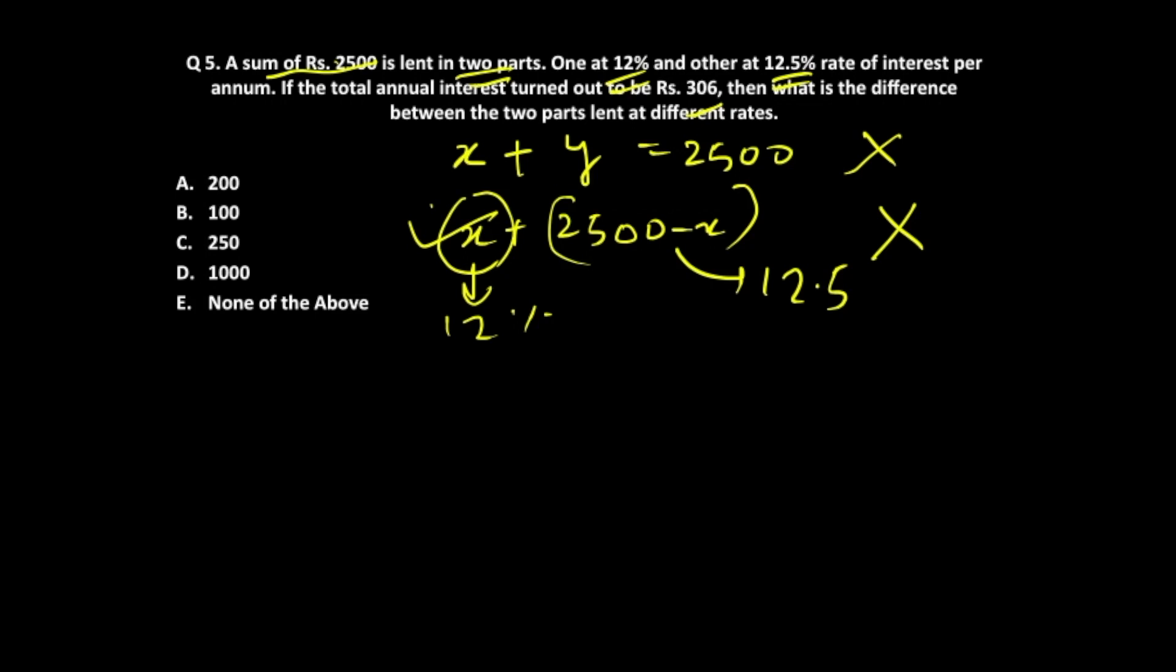To use allegation, consider the total annual interest of 306 over the sum of 2500. This gives you the average interest rate for both the sums.